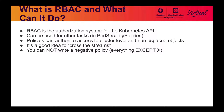One thing that's really important that you cannot do is write a policy that says 'I want to do everything except X.' You can't give access to everything except these four secrets in a namespace, or give cluster admin access to everything except for these three namespaces or the kube-system namespace. Those types of policies are really difficult to implement. RBAC won't implement them for you. And quite frankly, if that's your model, you probably need to reevaluate what you're doing.